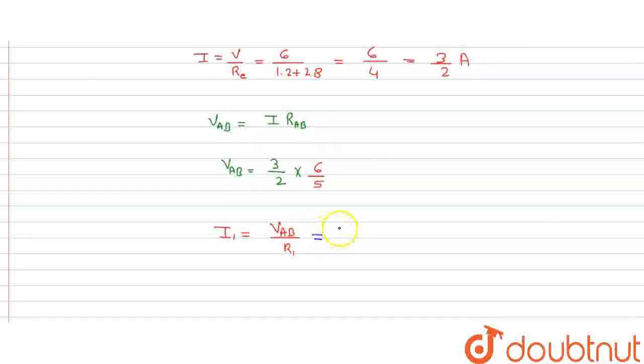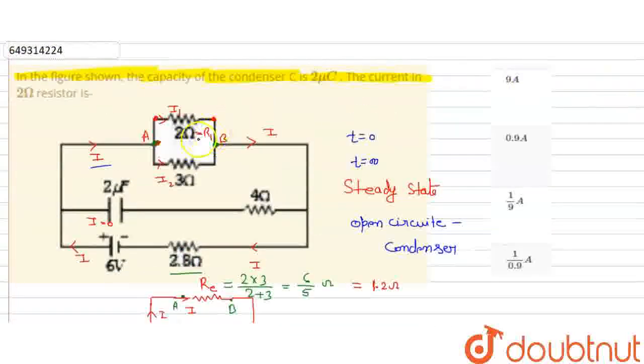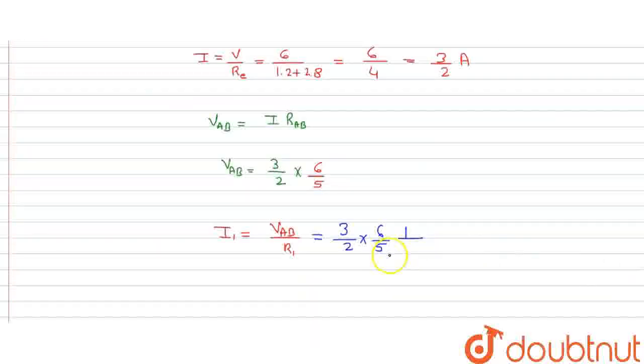Using the current divider formula: I1 equals 3 by 2 times 6 by 5 upon R1. R1 is 2 ohms. So this gives us 3 times 6 equals 18, divided by 10, which equals 9 by 10.